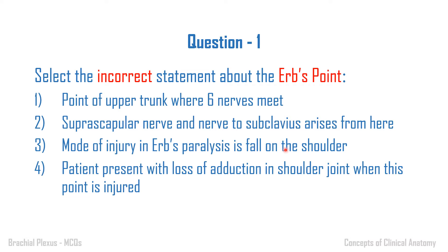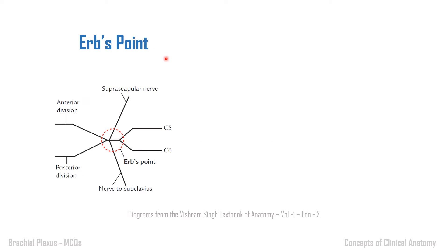Question one: select the incorrect statement about Erb's point. Option one: it is a point on the upper trunk where six nerves meet. Option two: suprascapular nerve and nerve to subclavius arise from here. Option three: mode of injury in Erb's paralysis is fall on the shoulder. Option four: patient presents with loss of adduction in the shoulder when this point is injured.